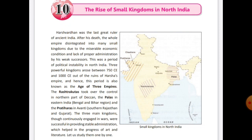In this chapter we will study what happened after Harsha's death in North India. In the previous class you studied that Harsha was a great king of the Vardhan Empire. After his death, his empire disintegrated — it broke up into many small parts.